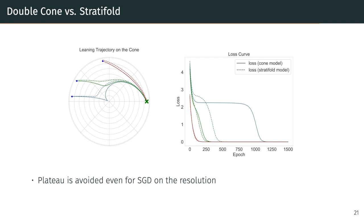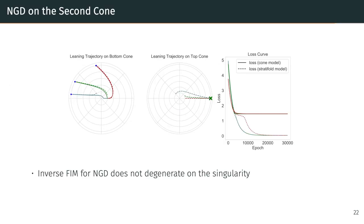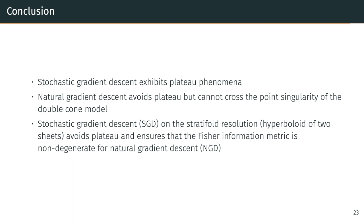For our second experiment we look at natural gradient descent again. Previously we observed that the inverse Fisher information matrix degenerates at the singularity. When the initialization distribution and the true parameterization are on different cones, we compare natural gradient descent on the double cone and on the resolution. On the resolution, the Fisher information matrix no longer degenerates at the singularity since we walk on a smooth manifold approximation. Finally, we conclude that stochastic gradient descent exhibits the plateau phenomenon, natural gradient descent avoids this plateau but cannot cross the point singularity of the double cone model, and stochastic gradient descent under stratifold resolution avoids this plateau behavior while ensuring that the Fisher information matrix is no longer degenerate for natural gradient descent.